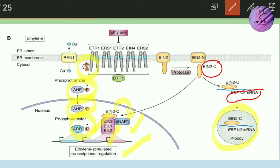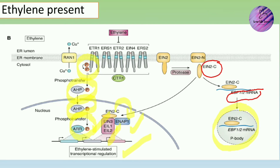So both ARR and the EIN3/EIL transcription factors are involved in this signaling process, inducing gene expression and producing the response mediated in the presence of ethylene. As mentioned in the previous lecture, ethylene is involved in differential gene expression, including genes like pectinase, hydrolase, and cellulase. The next slide will cover the triple response observed in the presence of ethylene.